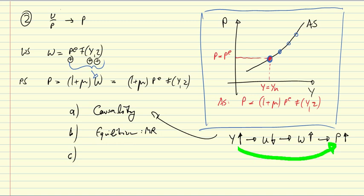And third, I want to talk about what happens when expectations change. So how would a rise in PE affect this curve? You see here that PE enters the AS relationship as an exogenous variable on the right hand side and it has a positive impact.